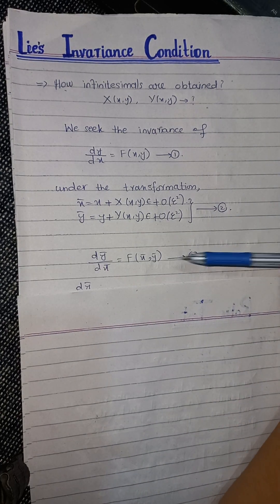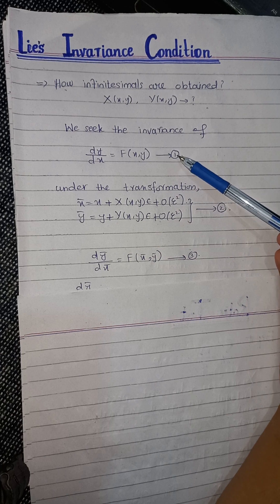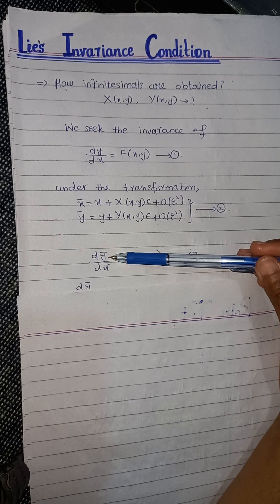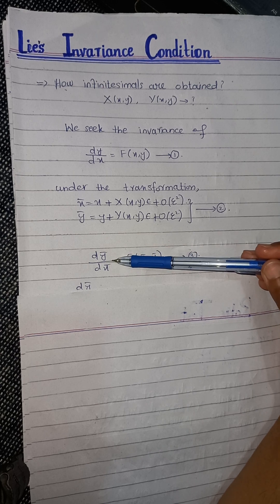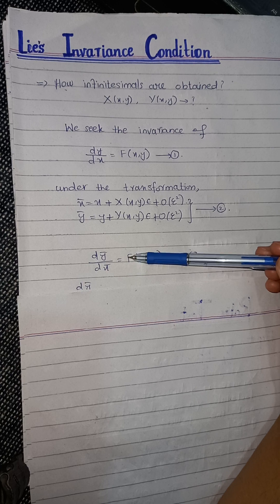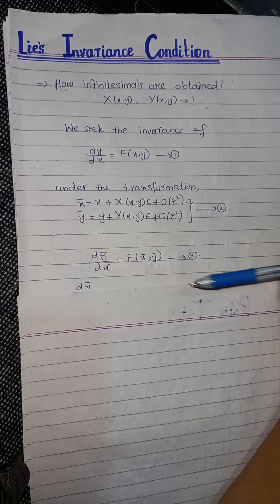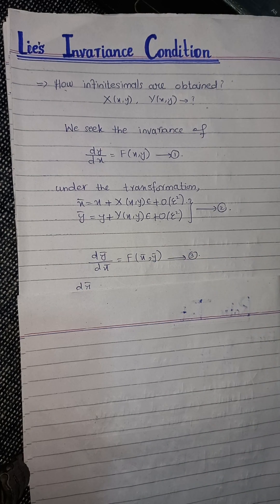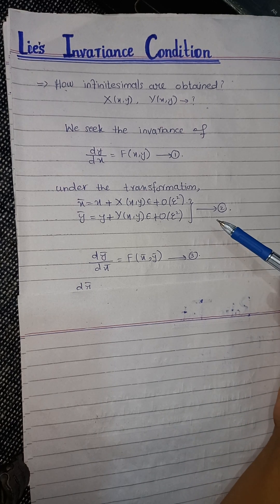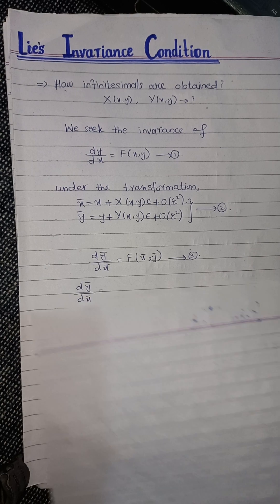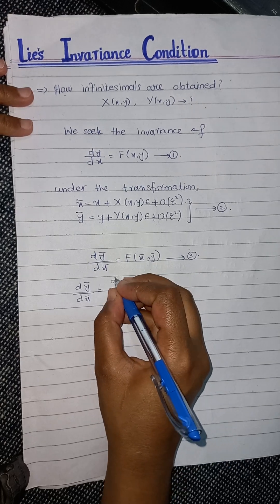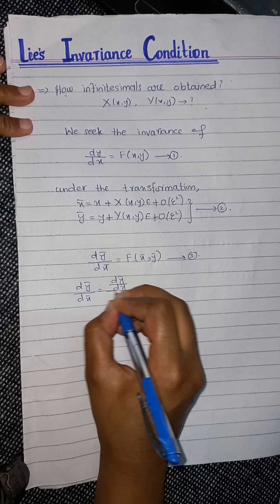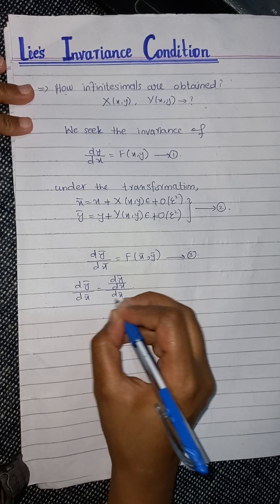If we want to prove the invariance of this equation, then we have to write our equation as dȳ/dx̄ = F(x̄, ȳ), as we did in the previous video. In doing so, as we are given the infinitesimal transformations, we need to know how the derivatives will transform. For the left-hand side, dȳ/dx̄ can be written as (dȳ/dx) divided by (dx̄/dx), because if we cancel them we get the original term.